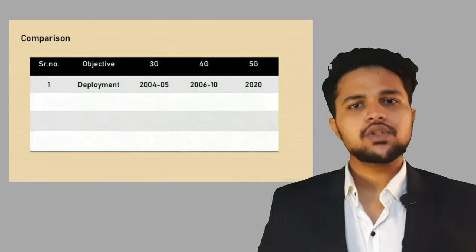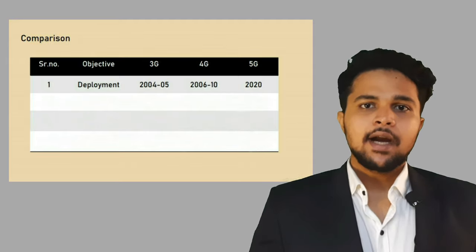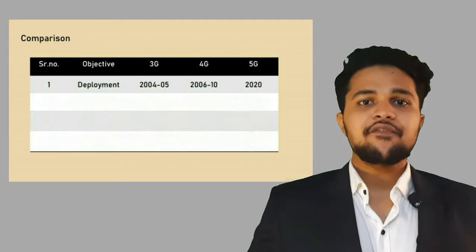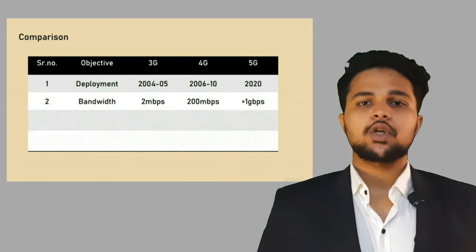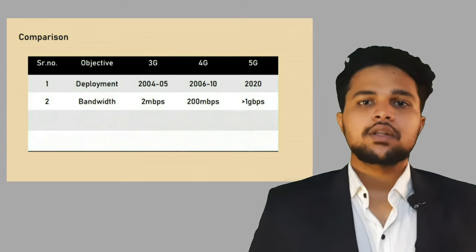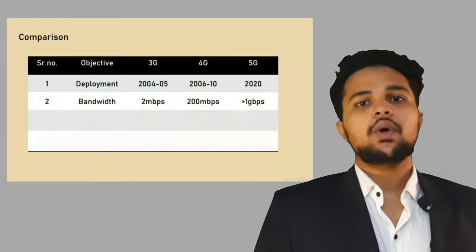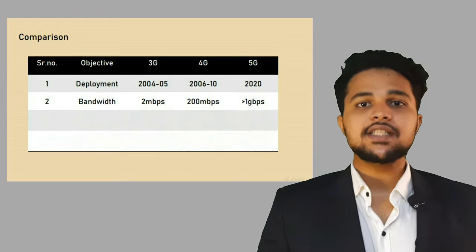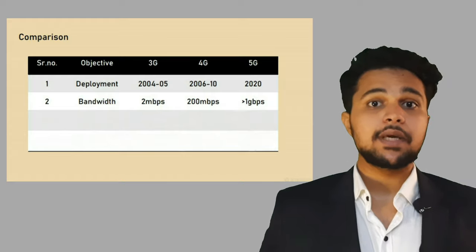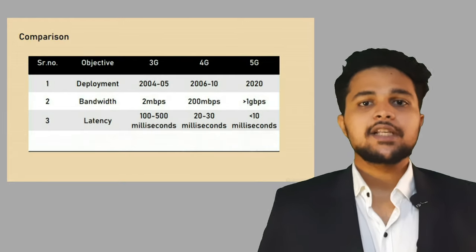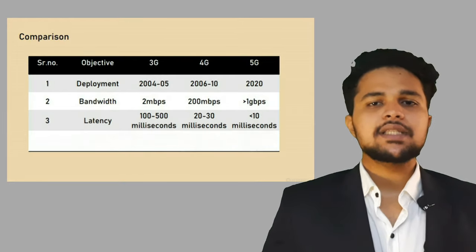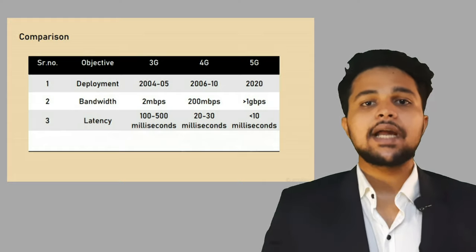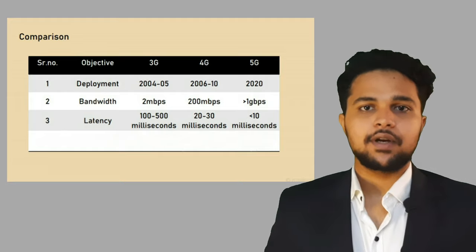The deployment of 3G was in 2004 to 2005, whereas 4G was in 2006 to 2010, and 5G is in 2020. Talking about bandwidth, 3G gives about 2 Mbps, whereas 4G gives about 200 Mbps, and 5G gives more than 1 Gbps. Next is latency — latency is mainly the time taken between your action and the response of your computer, the internet, and everything in between.